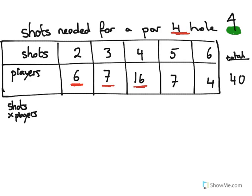16 players needed exactly what is recommended for a pretty good player. Seven went what we call one over par. They needed one extra shot. They took five shots to get into the hole and four of the players went two over par. They needed two extra shots. They should have been able to get it in in four but they took six.